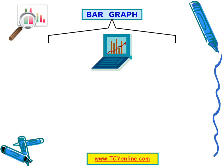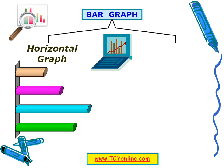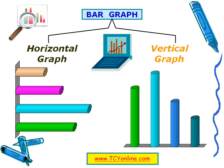Now let's look at the different types of bar graphs. Here are pictures of the different types. The first is a horizontal bar graph and the second is a vertical bar graph. In a horizontal bar graph, the bars are aligned horizontally, while in a vertical bar graph, the bars are aligned vertically.